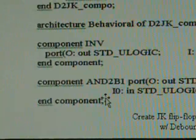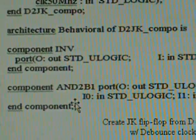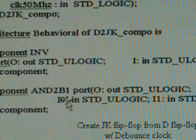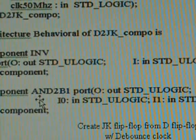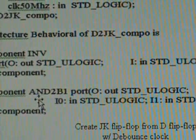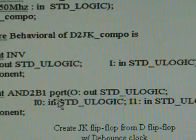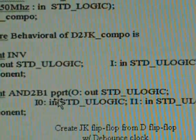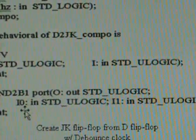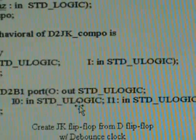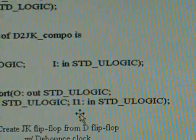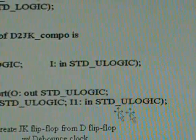We also use a NAND gate with two inputs where one input is inverted. Following Xilinx uniform naming convention, this is designated as N2B1, meaning one input is inverted. Its port has output O as standard U logic, followed by I0 as the first input in standard U logic — the inverted one — and I1 as the second non-inverted input in standard U logic.